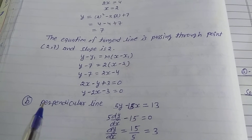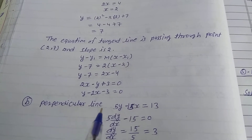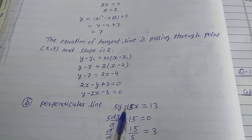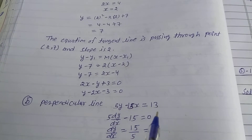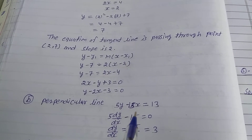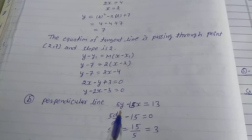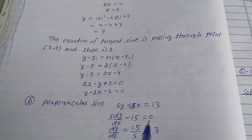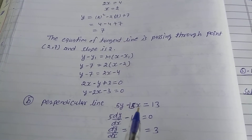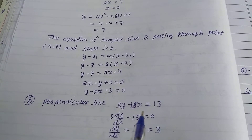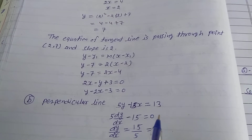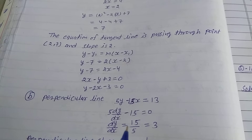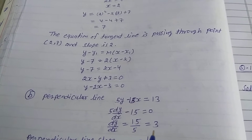For part (b), the given perpendicular line equation is 5y - 15x = 13. To find its slope, differentiate with respect to x: 5(dy/dx) - 15 = 0, so dy/dx = 15/5 = 3. The perpendicular line slope is 3.